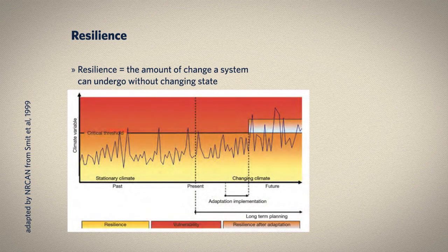Another term you will likely hear often in discussions of impacts and adaptation is resilience. While adaptive capacity generally refers to the ability of human systems to respond to climate change, resilience is often used to refer to the ability of natural systems to return to a healthy state following a change or shock. Resilience in an ecological system can mean an ecosystem is equipped to weather a storm and not change at all after a shock, or it can mean the ecosystem reorganizes after a shock but still performs essentially the same function. The resilience of a system depends on its coping range — the amount of change it can absorb without fundamentally shifting. Adaptation helps to expand this coping range, raising the threshold beyond which the system changes and enhancing resilience. The idea of resilience grew out of ecology but is now being applied to human systems as well.